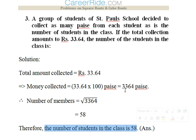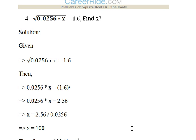Fourth question: square root of 0.0256 times x equals 1.6. Find x. So what we would do here is we would square both sides. This would remove this sign. It would be 0.0256 into x is equal to 1.6 square. So 1.6 square can be easily written as 2.56. Now we'll find out x: 2.56 divided by 0.0256 that would give 100 as the answer.